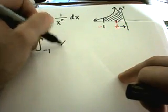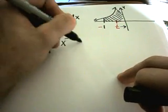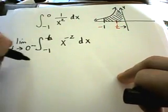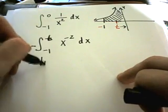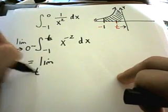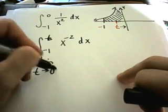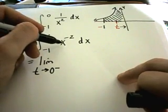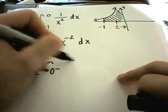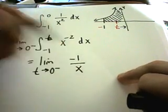So 1/x² is the same as x to the negative second. If I calculate the anti-derivative I'll get the limit, again t is approaching zero from the left. The anti-derivative of x to the negative second is negative one over x.